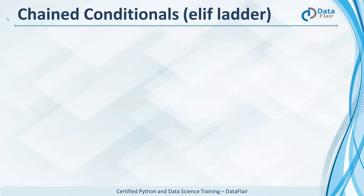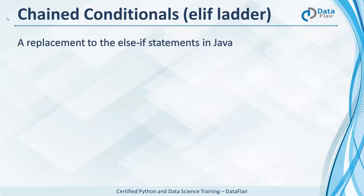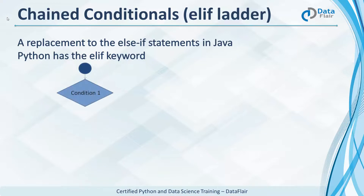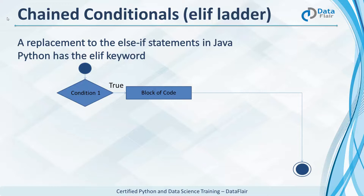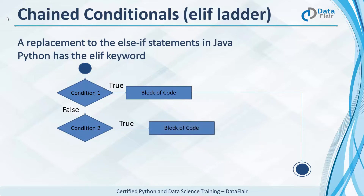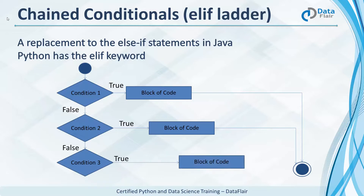Let's talk about chained conditionals. In Java, we can use else-if statements to declare multiple conditions and possibilities. In Python, there is no else-if, but we have the elif keyword. It reaches condition 1 — if this is true, it executes the block of code under it, then reaches the statements after the entire elif ladder. If condition 1 is false, it checks condition 2; if true, executes its block and moves on. If condition 2 is also false, it checks condition 3; if true, executes its block. If even condition 3 is false, it skips to the statements after the elif ladder. We can keep this going as long as we want.